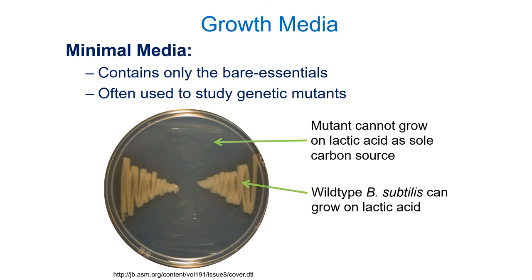Here we've taken two different strains of Bacillus subtilis and plated them onto minimal media. Wild type B. subtilis — the normal, most commonly encountered form — can grow on these plates using lactic acid as the only carbon source. A mutant form can't do this, presumably because it has a mutation in a gene coding for one of the enzymes needed for that biochemical pathway.